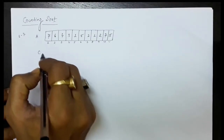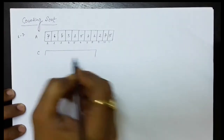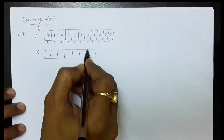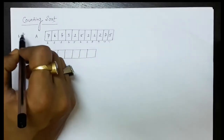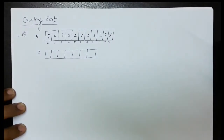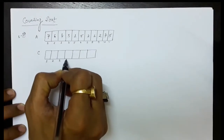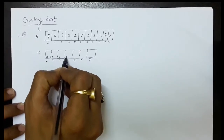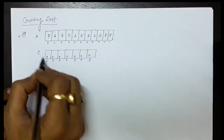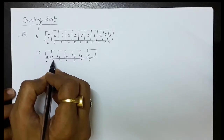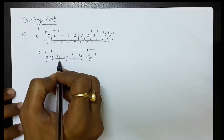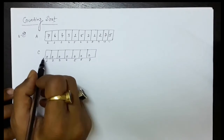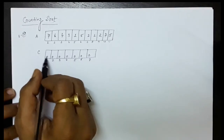For performing the counting sort, we will count every occurrence of each number. We take a counting array C with size equal to the largest number in the set. The largest number here is 7, so the length of the counting array will be 7, with indexes 1 through 7. We initialize every element of the C array to 0, meaning we consider every number is appearing 0 times initially.